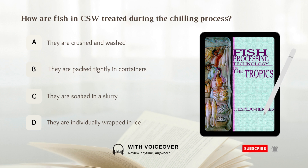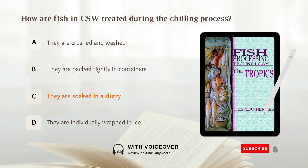How are fish in chilled seawater treated during the chilling process? A. They are crushed and washed. B. They are packed tightly in containers. C. They are soaked in a slurry. D. They are individually wrapped in ice. Answer: C. They are soaked in a slurry.